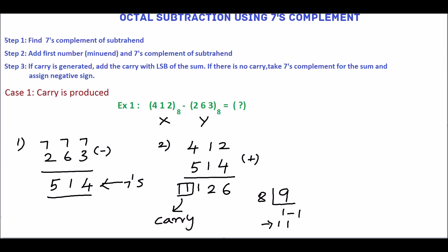Add this carry with the least significant bit of the sum. So in step 3, we will add this sum 126 and the carry, end-around carry. 6 plus 1 is 7, 2, 1. The answer is 127 base 8.